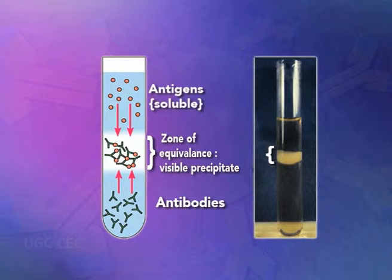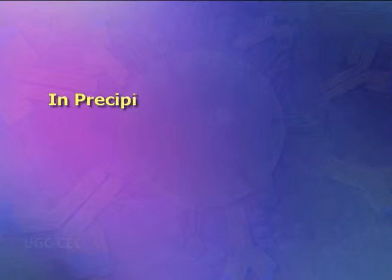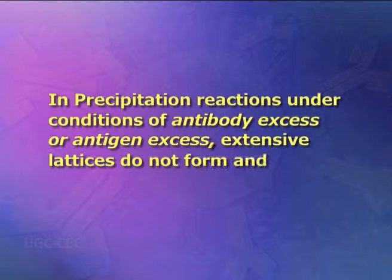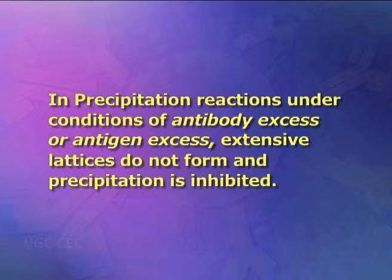Excess of either antibody or antigen interferes with maximal precipitation, which occurs in the equivalence zone within which the ratio of antibody to antigen is optimal. As a large multi-molecular lattice is formed at equivalence, the complex increases in size and precipitates out of solution. In precipitation reactions under conditions of antibody excess or antigen excess, extensive lattices do not form and precipitation is inhibited.